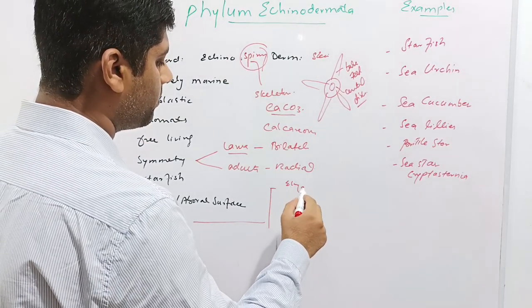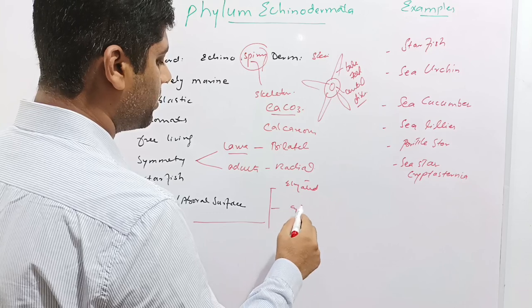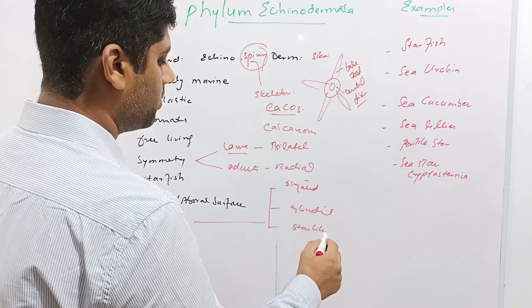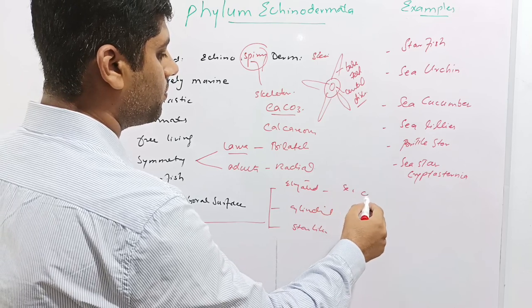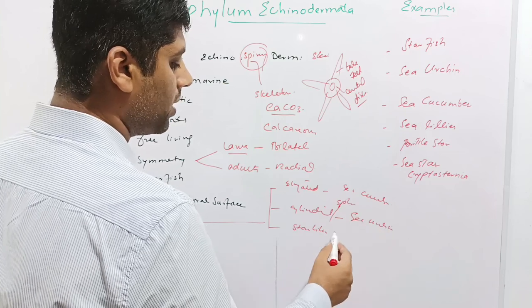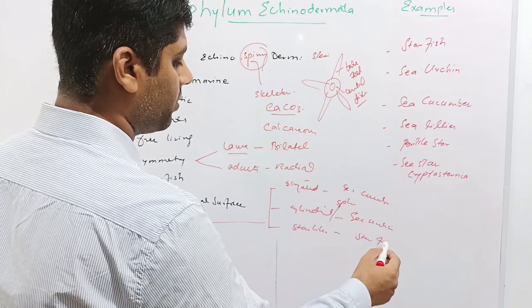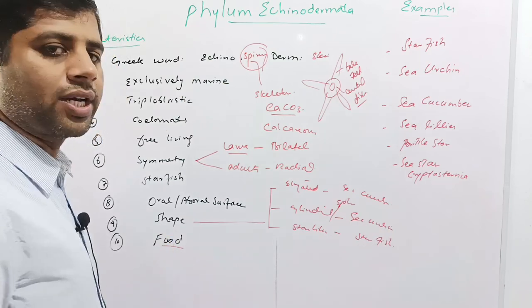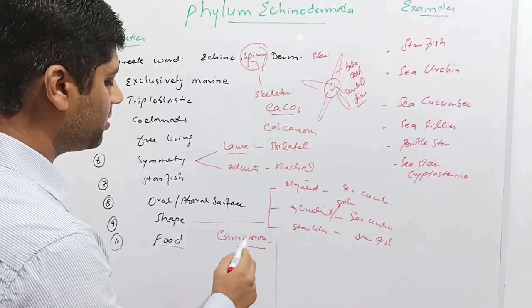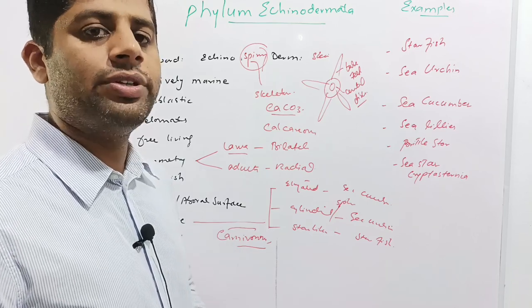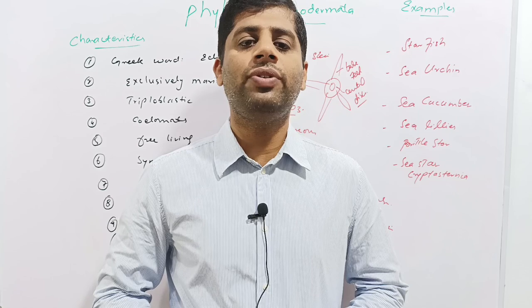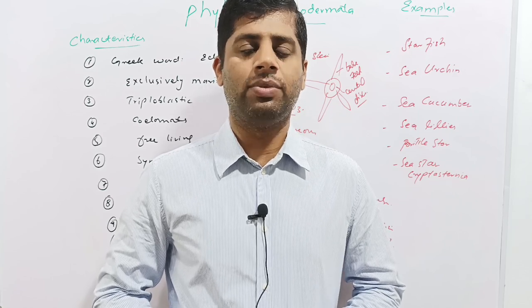Echinoderms may be elongated or cylindrical or star-like in shape. Sea cucumber is elongated, sea urchin is cylindrical or spherical, and starfish is star-like. Echinoderms are all carnivorous animals and they feed on crustaceans, crabs, and larvae of small fish. They are all free living and feed on small fish, larvae, or other aquatic animals.